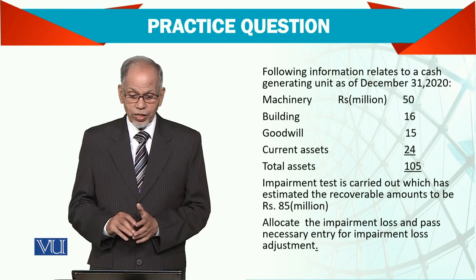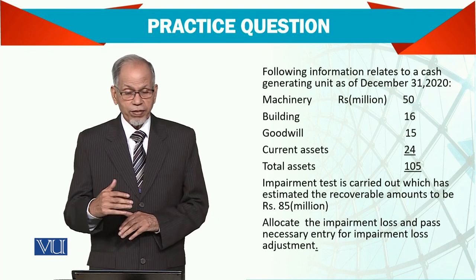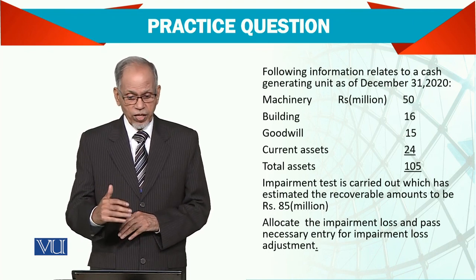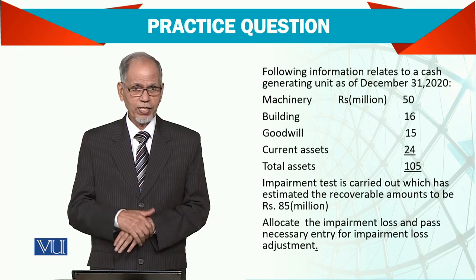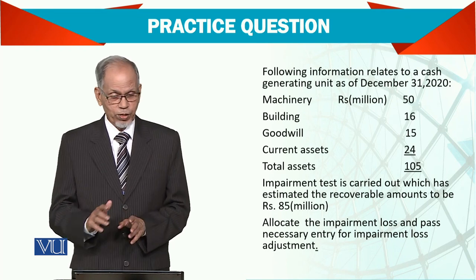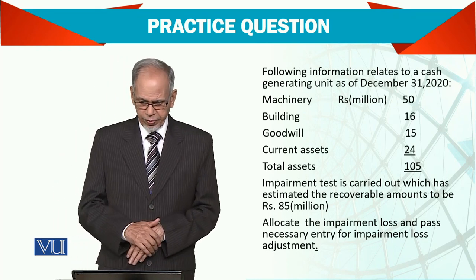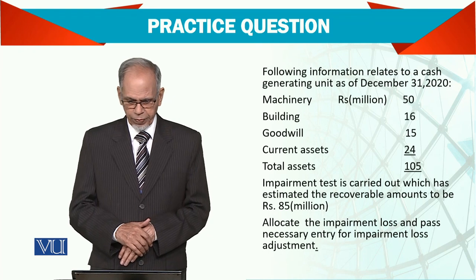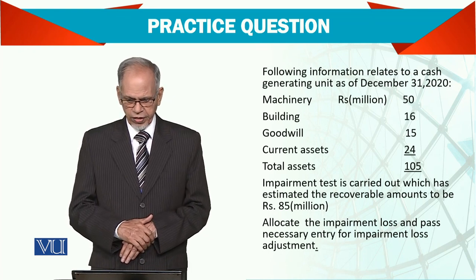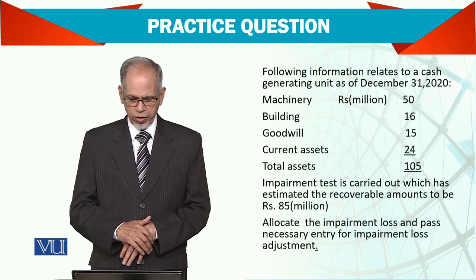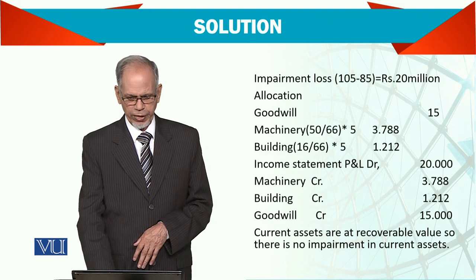But the question here is we have four assets — maybe five or six — so we cannot do that. We need to allocate the impairment loss and pass the necessary entry for impairment loss adjustments. Let us see how.